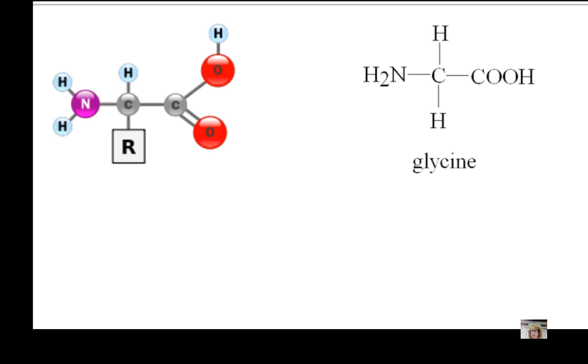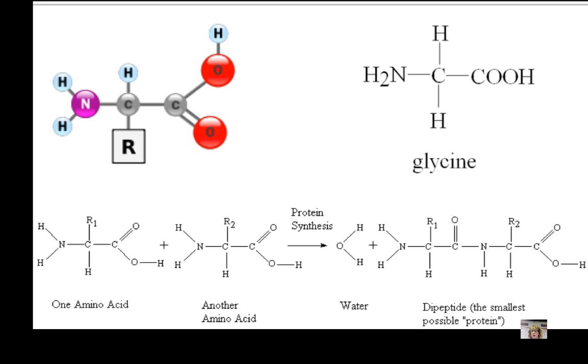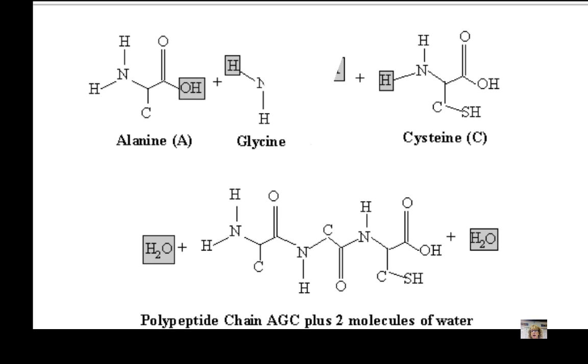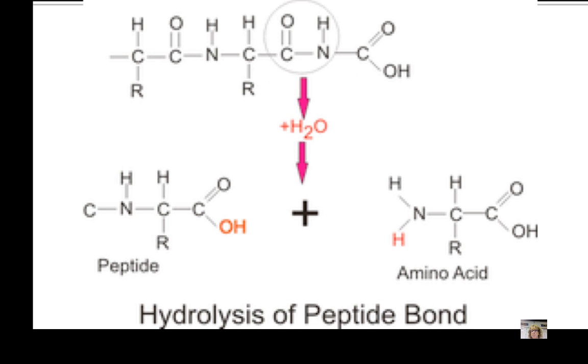Amino acids are linked together by dehydration synthesis. As you can see, a hydroxide group and a hydrogen group on adjacent amino acids are removed to form water. And a peptide bond forms between them. Peptide bonds are the covalent links between two amino acids. A polypeptide is a chain of amino acids. Amino acids are released from polypeptides by hydrolysis. A molecule of water is added back to break the peptide bond and separate the amino acids.